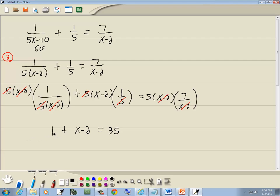Now you should always combine together numbers at any step. 1 minus 2 gives us negative 1. So we've got x minus 1 is equal to 35.